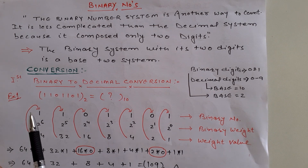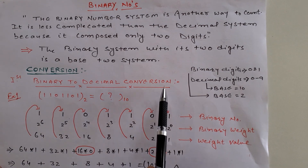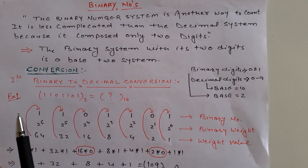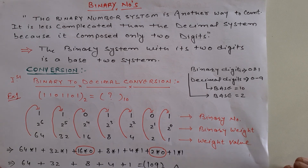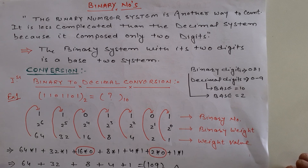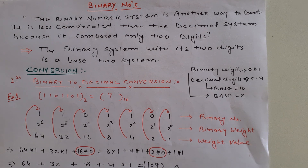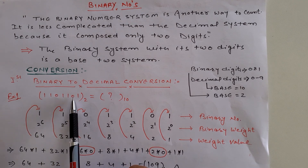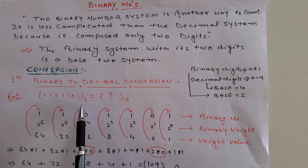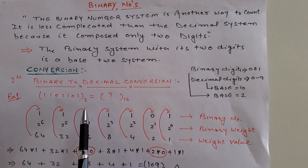Here we will discuss the first conversion: binary to decimal conversion. Whatever binary number is given, you have to convert it to decimal form. Sometimes in questions it is specified that you have to convert this binary number to decimal. If it's not given, you have to identify the conversion through its base. For example, I am taking the number 1101101 with base 2 — that means it's a binary number — and you have to convert it.